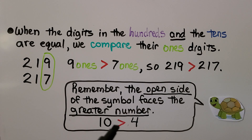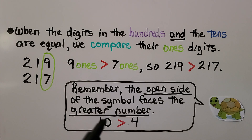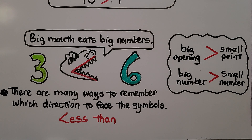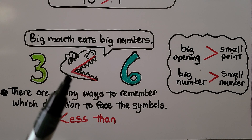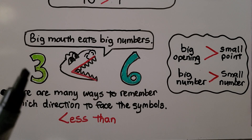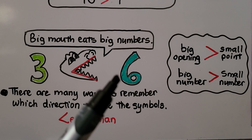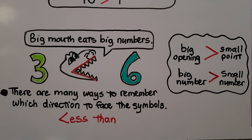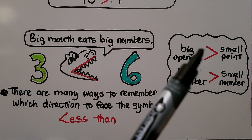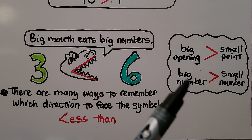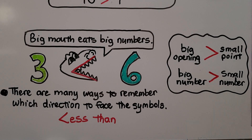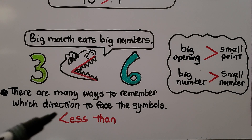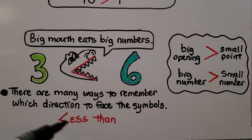Remember, the open side of the symbol faces the greater number — like 10 is greater than 4, so the big open side is by the bigger number. Some people say the big mouth eats the big number. 3 is less than 6, so the big mouth is going to eat the 6. We can also see one side as a big opening and the other as a small point — the big number goes by the big opening. And remember, the less than symbol kind of looks like a sideways or crooked L for less.